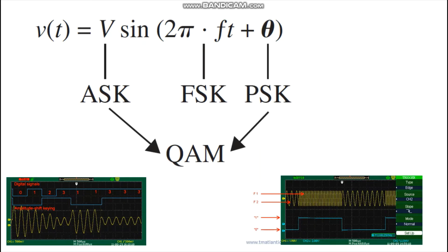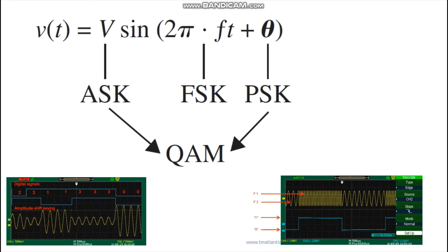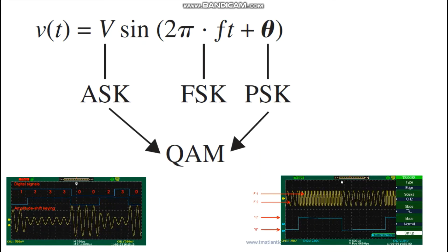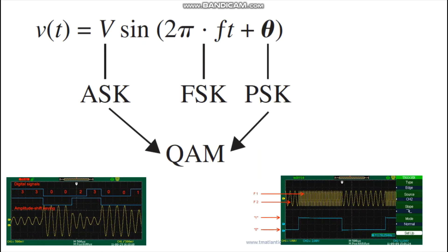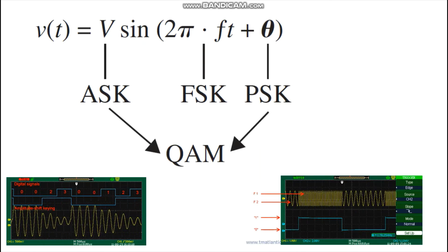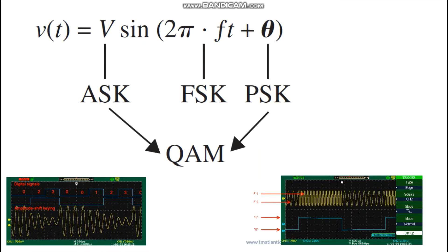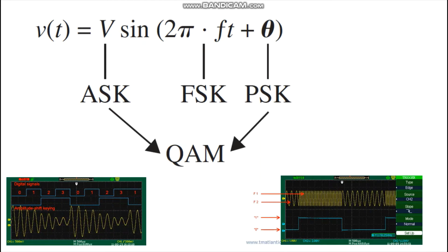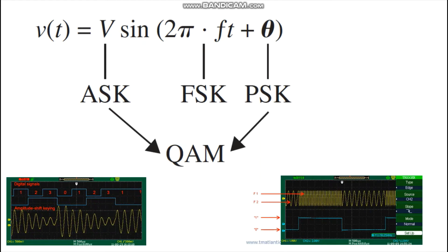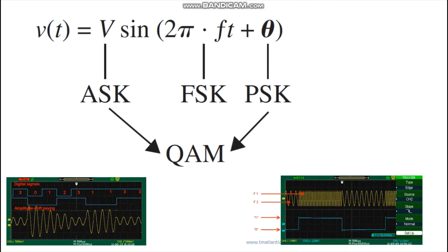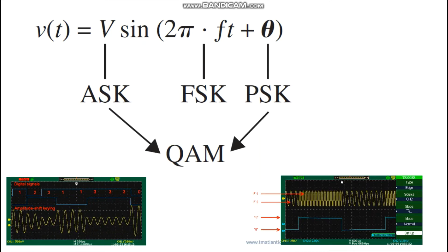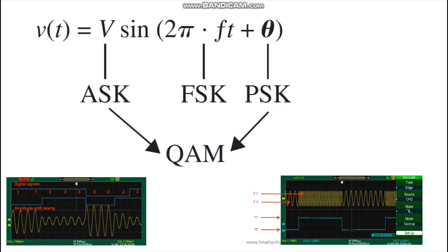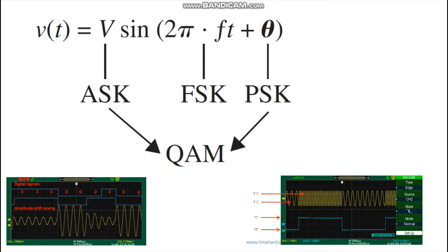And if both amplitude V and phase θ are varied proportional to the information signal, that process is referred to as quadrature amplitude modulation (QAM). Thus, this equation represents that ASK, FSK, PSK, and QAM are all forms of digital modulation techniques.